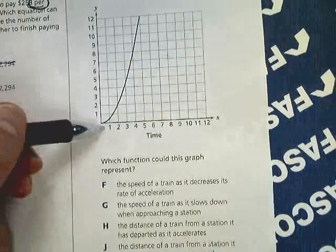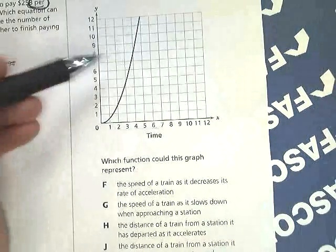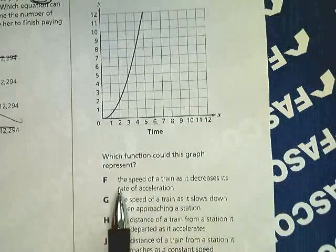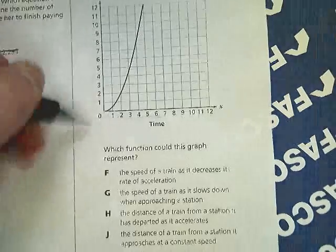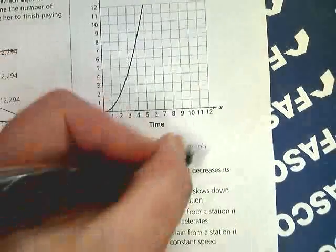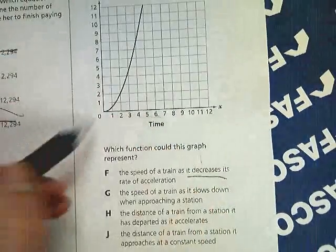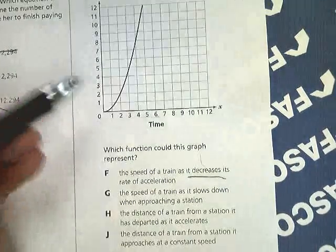Now this shows that time increases and then something happens. F says the speed of a train as it decreases its rate of acceleration, but the numbers are going up. If it's decreasing its acceleration, how could the numbers continue to go up over time? So it's not that.